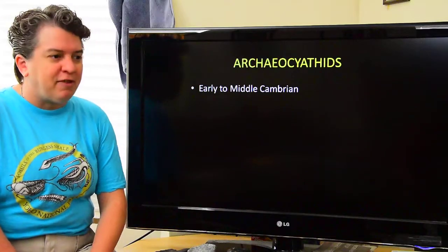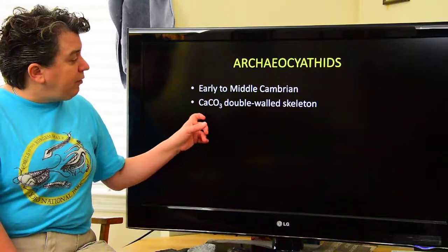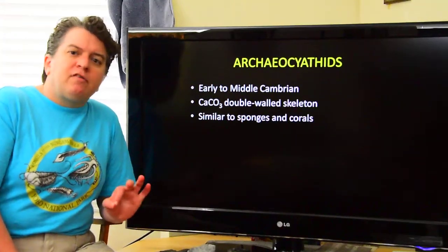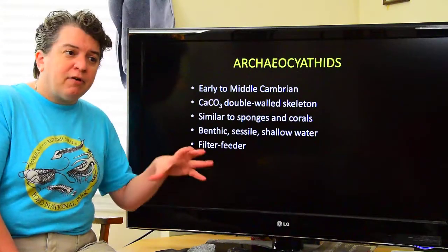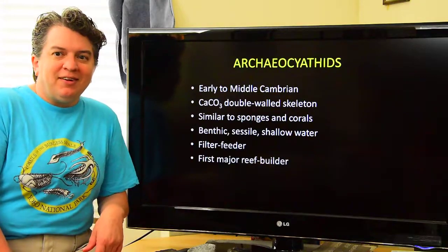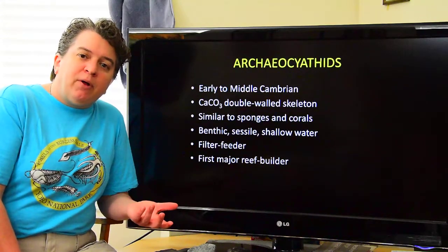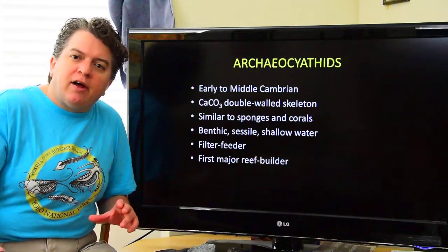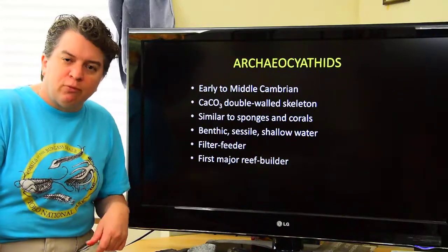Moving on to multicellular organisms, we'll start with archaeocyathids. Archaeocyathids existed from the early to middle Cambrian, making them an excellent index fossil. They're made from calcite and had a double-walled skeleton. They're similar to sponges and corals, but their anatomy is different. They're benthic, sessile, live in shallow water, and are filter feeders. In every time period of the Paleozoic, reefs are being built, but the organisms making them differ — in the early to middle Cambrian, the reef builders were these archaeocyathids, our first major reef-building organism.